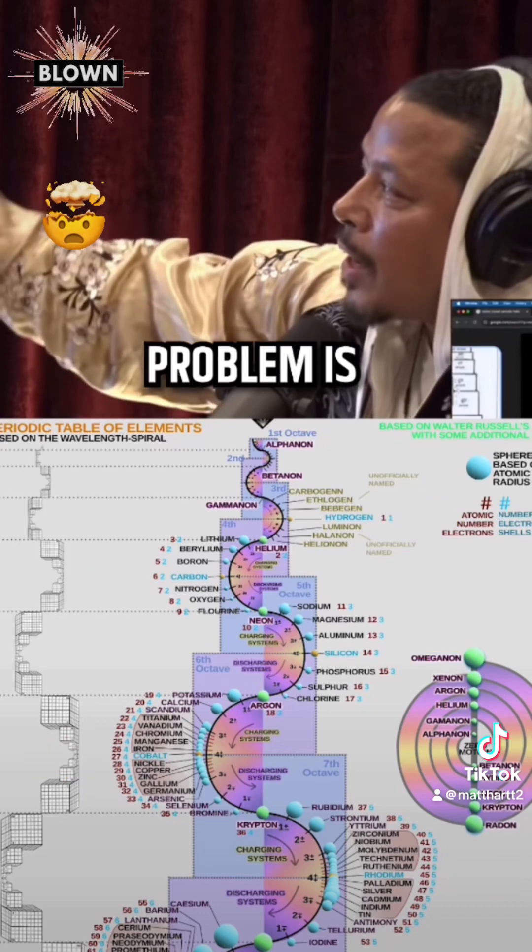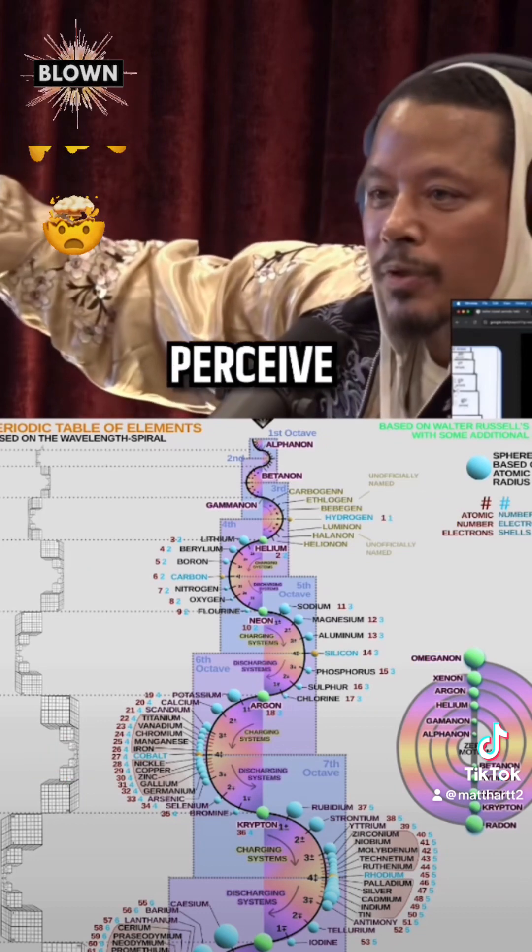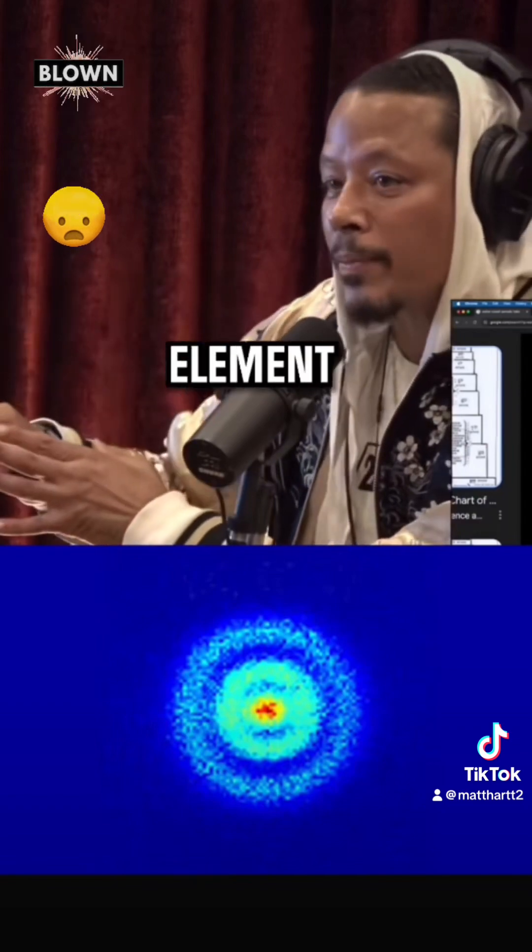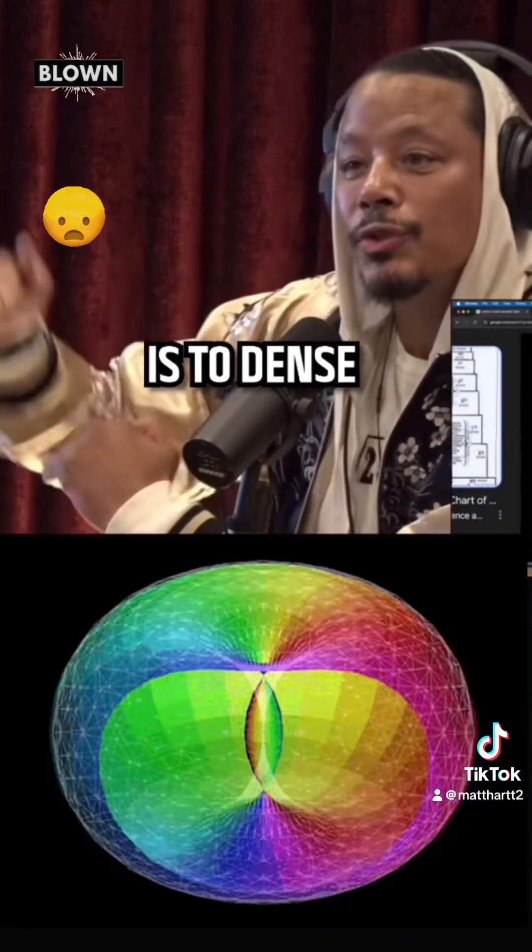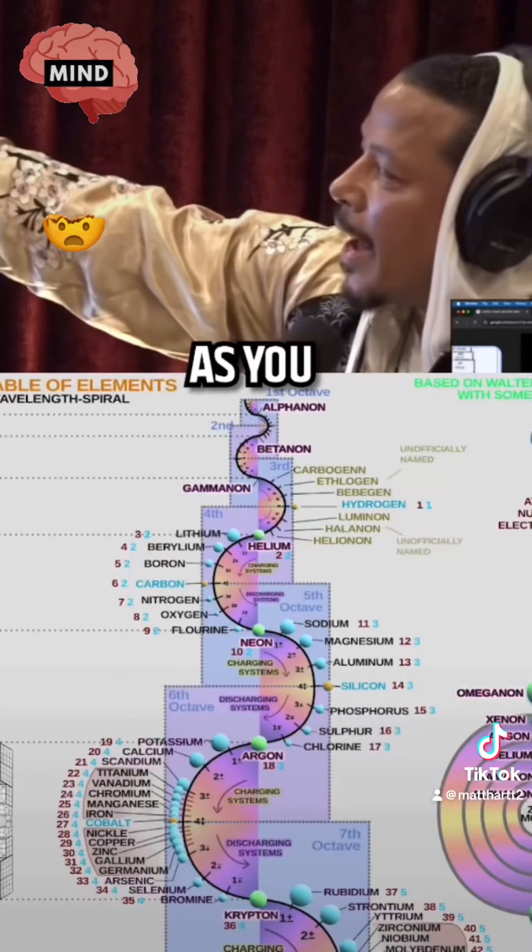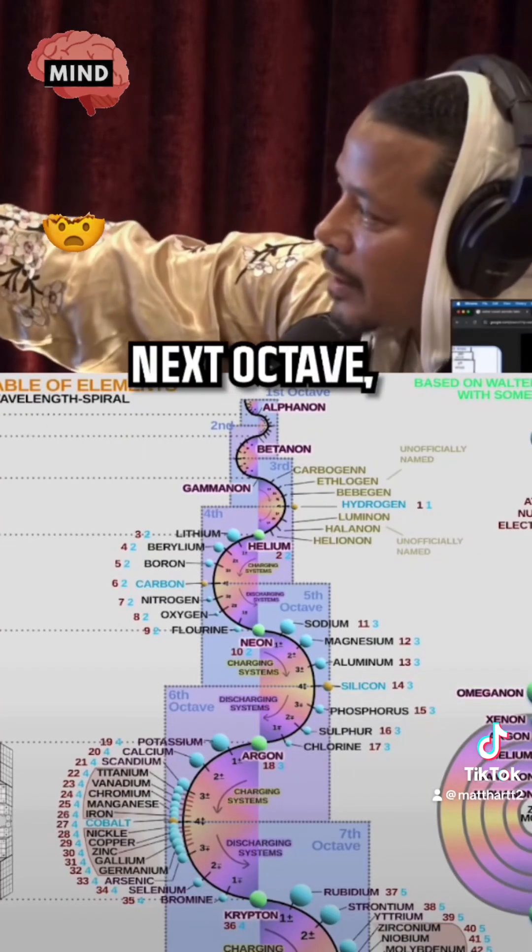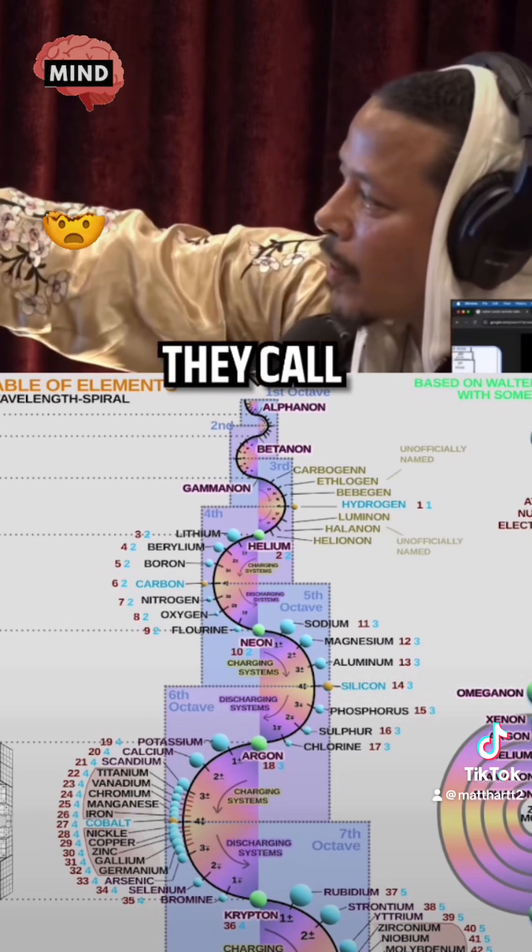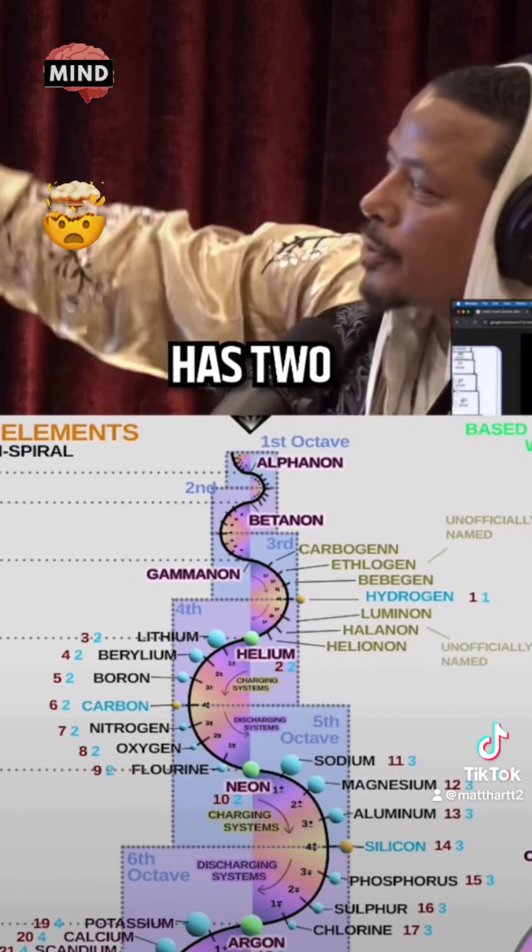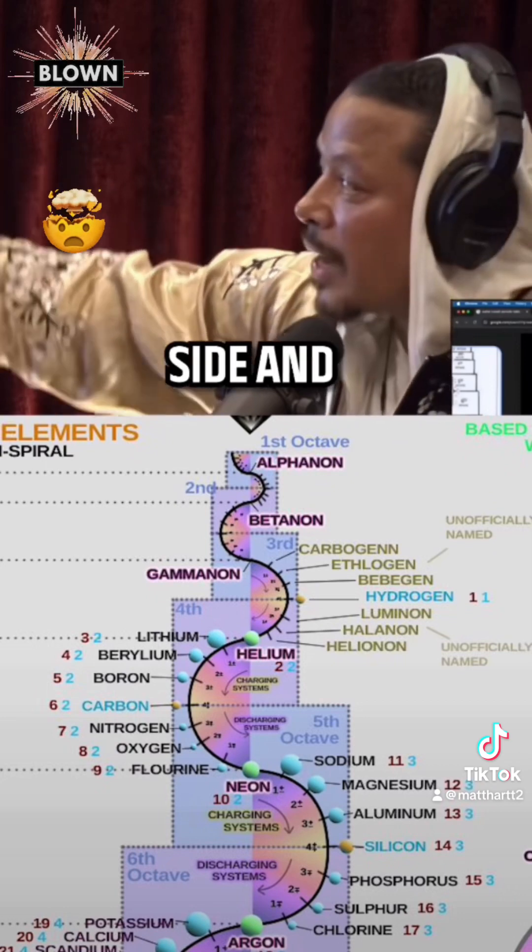Now the problem is the first thing that we're able to perceive is hydrogen. That's the first visible element because before it is too dense for us to perceive it. You understand what I'm saying? As you reach into the next octave, the carbon octave, and they call that a bisexual tone because the carbon has two tones to it.